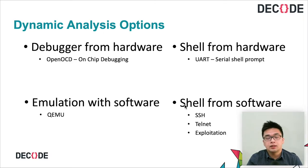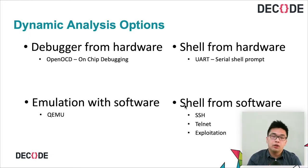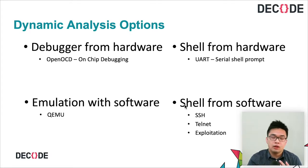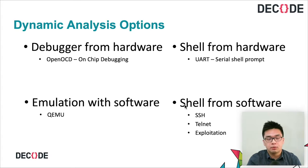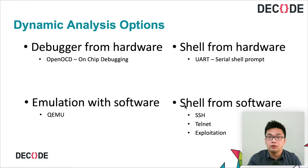With dynamic analysis you want to achieve two things: get a shell and a debugger. You can approach this from the software side or the hardware side. From the software side, the easiest way to get a shell would be to go to the router settings page and try to enable SSH or Telnet service. From there you could set up a debugger. If your firmware runs on some sort of Linux variant, you could try emulating it with QEMU.